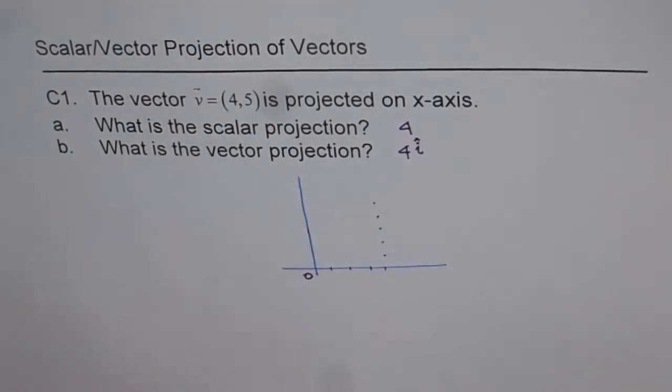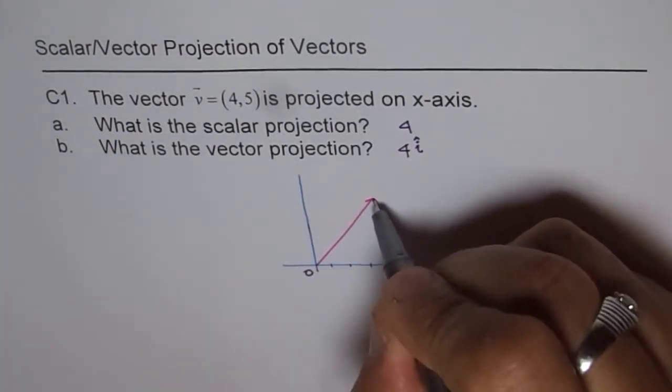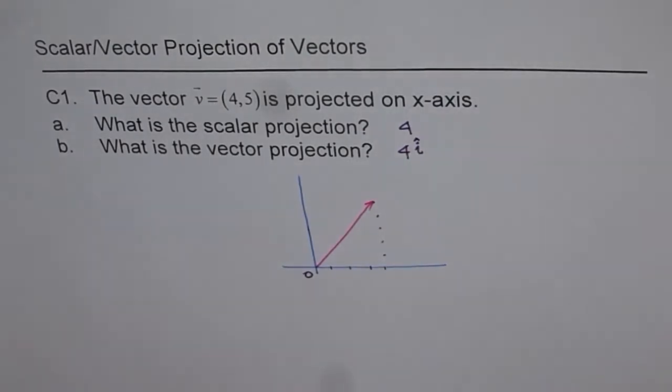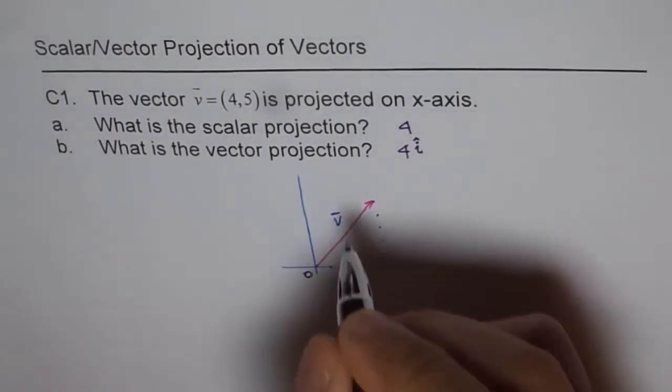When we connect this, let me connect it with some different ink, when we connect this we get a vector and this vector we are calling vector V. We call this as vector V and the components are 4 and 5.